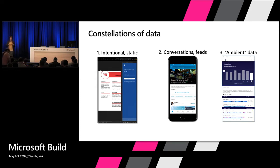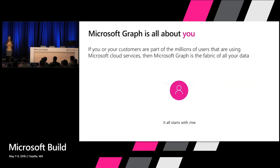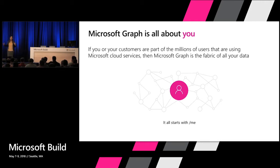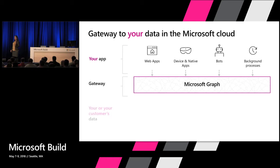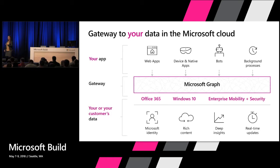With this context about the constellations of data, here is what we have in Microsoft Graph. We have data about you and your usage of Microsoft services. Whether you're a customer on our commercial or consumer cloud, if you have an account with us, then you have data in the Microsoft Graph. I get asked: how do I get my data in the graph? Well, if you're a Microsoft customer, you already have your data in the Microsoft Graph.